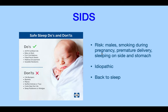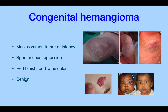Sudden infant death syndrome (SIDS) has unknown etiology, but risk factors include male sex, smoking during pregnancy, premature delivery, and importantly letting the child sleep on their side or stomach — so remember: back to sleep. Congenital hemangiomas are the most common tumors of infancy; they resolve on their own, appear port-wine red in color, and are benign.